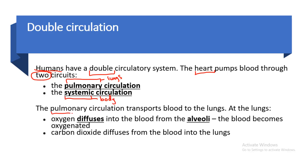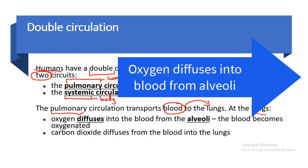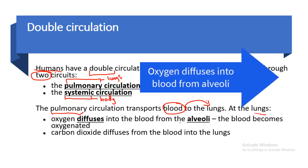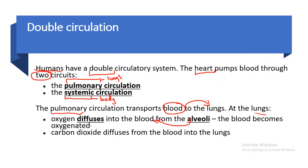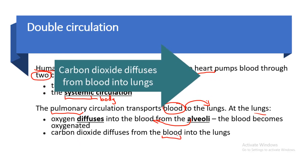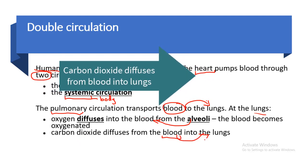The pulmonary circulation transports blood to the lungs. At the lungs, oxygen diffuses into the blood from the alveoli, and the blood becomes oxygenated — meaning it is rich in oxygen. Carbon dioxide diffuses from the blood to the lungs, and the lungs pass this carbon dioxide out of the body.